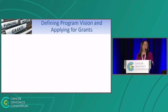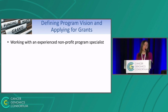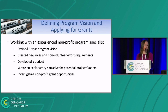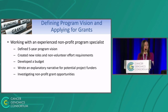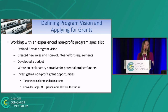A lot of what's been happening over this last year is we've been further defining the programmatic vision in anticipation of starting to apply for grants. We've been working with an experienced nonprofit program specialist, and we've defined a five-year program vision. We've created new roles and non-volunteer effort requirements, developed a budget, and wrote an explanatory narrative so that people who could potentially fund us would understand what we are trying to do. We're investigating nonprofit grant opportunities, initially targeting smaller foundational grants with anticipation of going for larger NIH grants in the future.